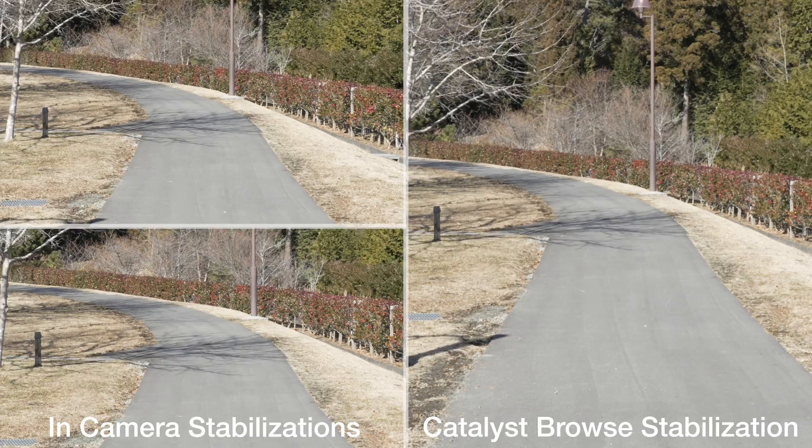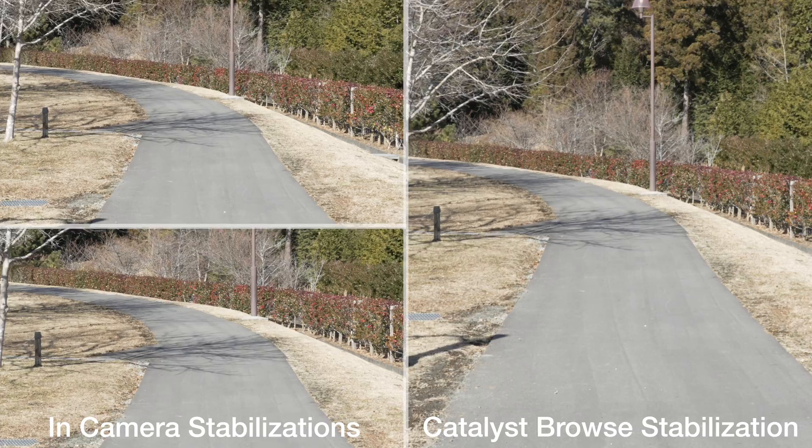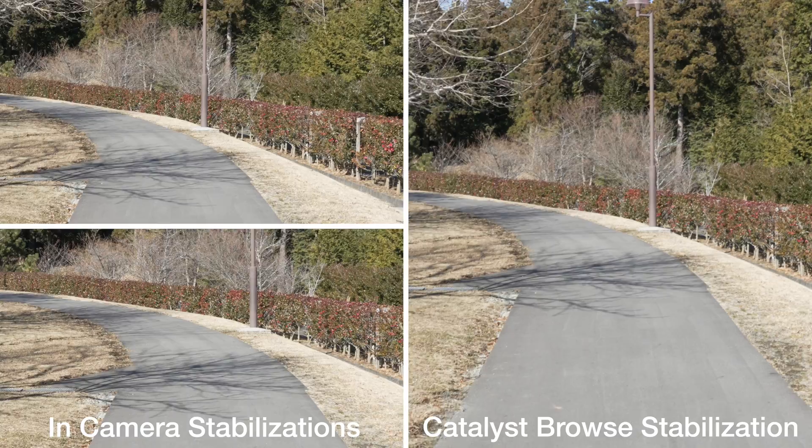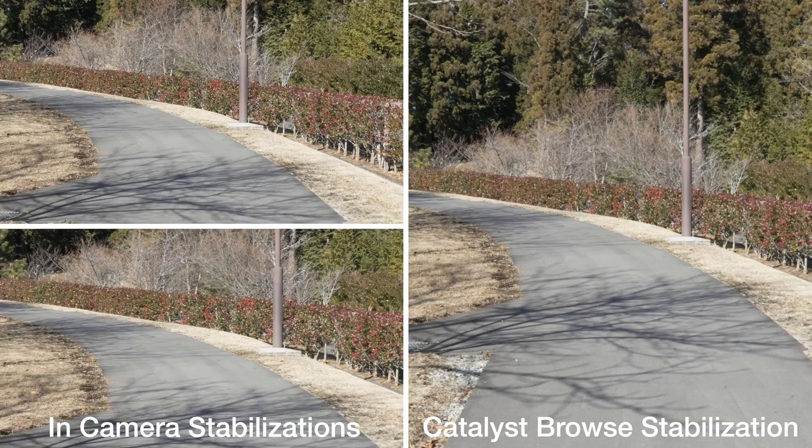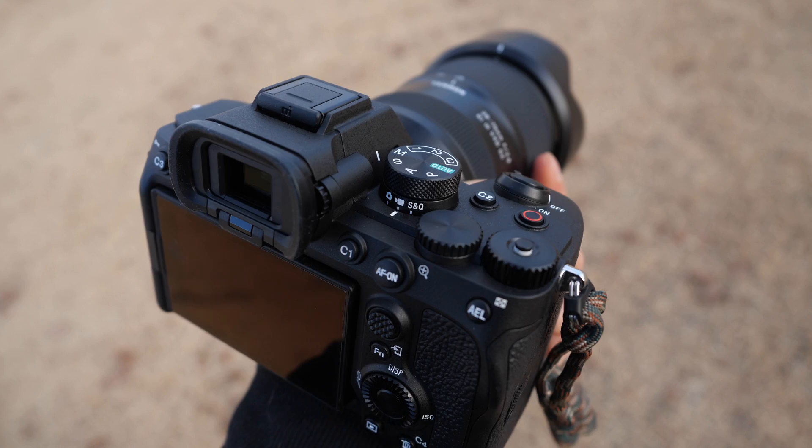So as you saw, Catalyst Browse produces stabilized clips that are way beyond what Sony's in-camera stabilization modes can provide. And as a bonus, no matter what stabilization mode you use in-camera, you can always stabilize that video further in Catalyst Browse if you want to. I hope you all found this helpful, and I'll catch you in the next one — take it easy!